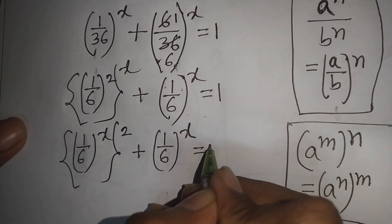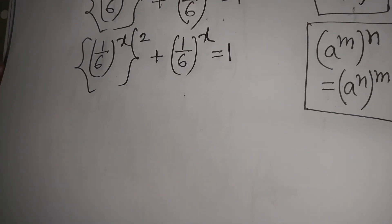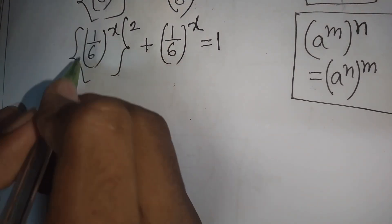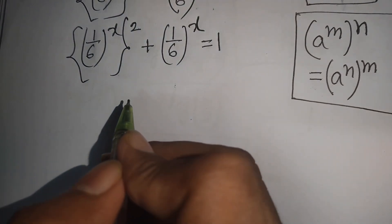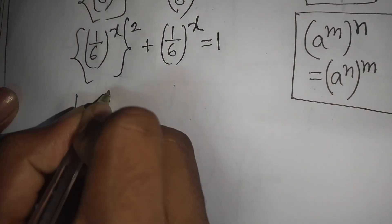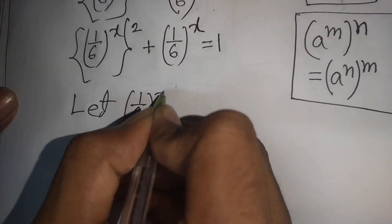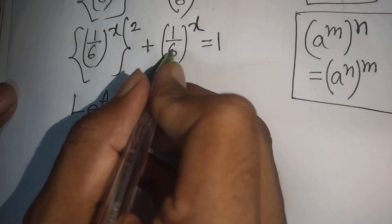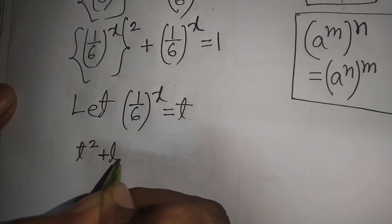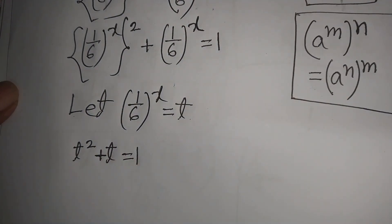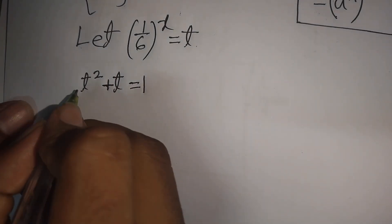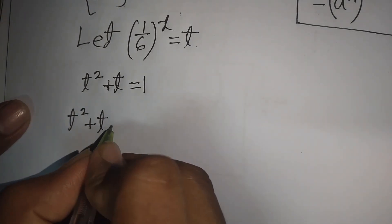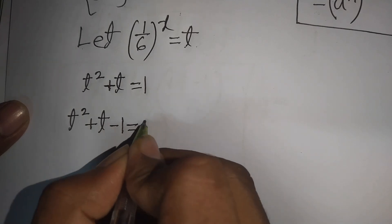Now, let t = (1/6)^x. Our equation becomes t² plus t, and moving 1 to the left side gives t² plus t minus 1 equals 0.